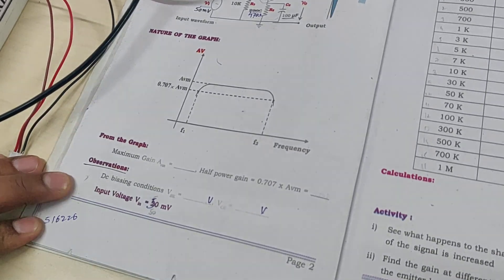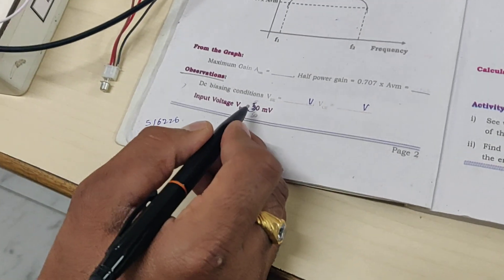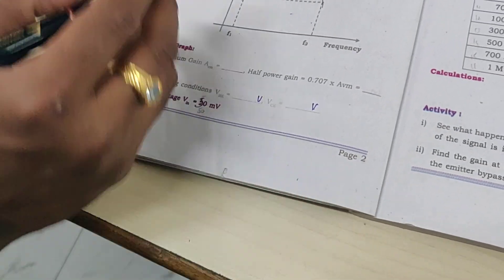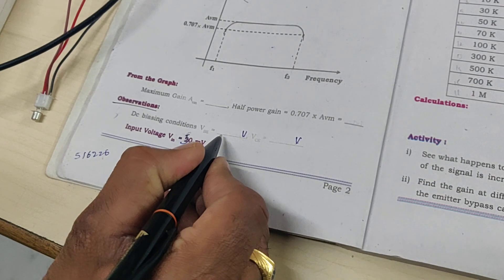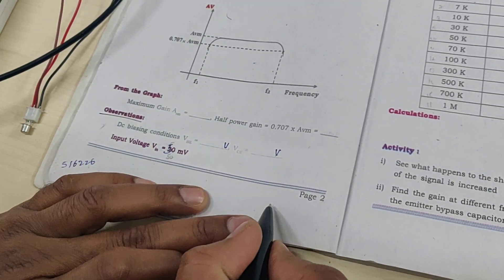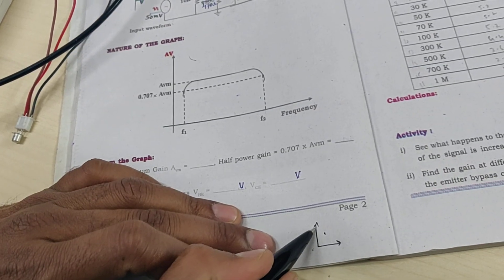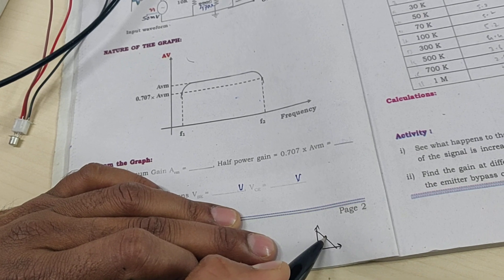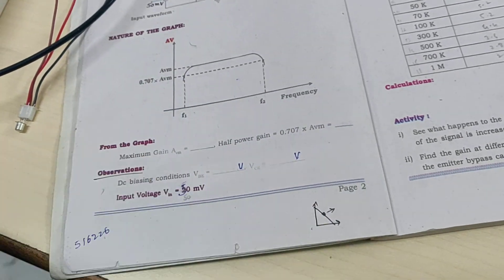First, we need to check the biasing condition. When I turn it on I should get VBE. For a silicon transistor, theoretically I should get 0.7 volts. The operating point has to be at the midpoint. When I draw the load line it should be here. The operating point at the midpoint is called the active region.